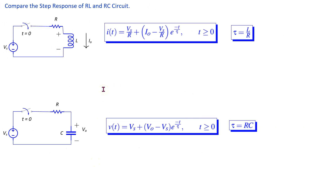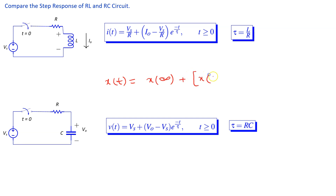Finally, we compare the step responses of RL and RC circuits. In the RL circuit step response, the solution is in terms of current. In the RC circuit step response, we solve for the voltage across the capacitor. In general, the solution is x(t) equals x(∞) plus [x(0 plus) minus x(∞)] times e raised to the power minus t over tau, where x is the capacitor voltage for an RC circuit and the inductor current for an RL circuit. The time constant tau is RC for an RC circuit and L/R for an RL circuit.